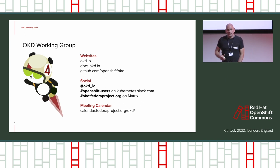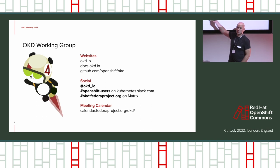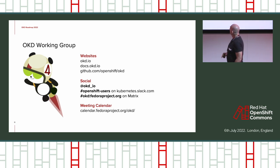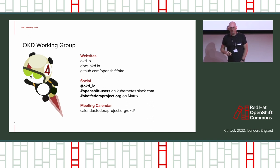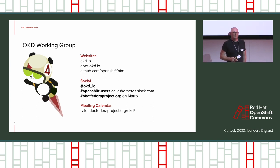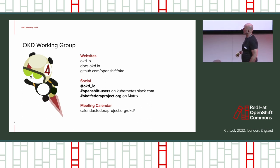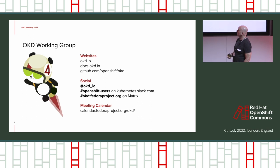We've launched a Twitter account — that's where we'll announce the trials. So if you want to get into the SCOS version, play with layering when it's available, or help with the operator work, we'll announce everything through that Twitter. You can also find us on the Kubernetes Slack, and if you're a Fedora community member, we're on Matrix as well. All details are available on OKD.io — go to the working group section.